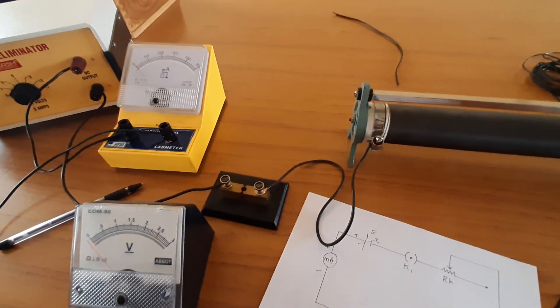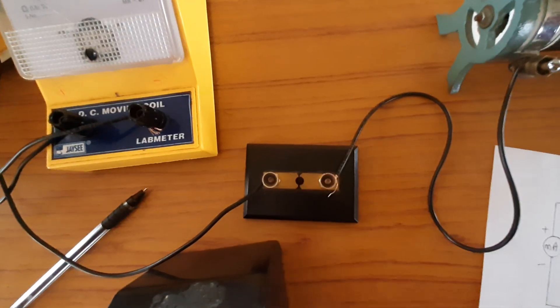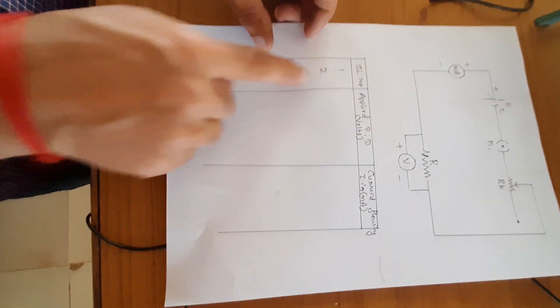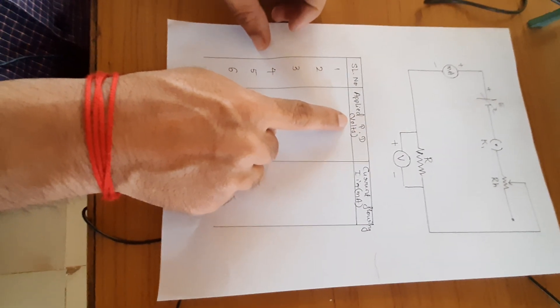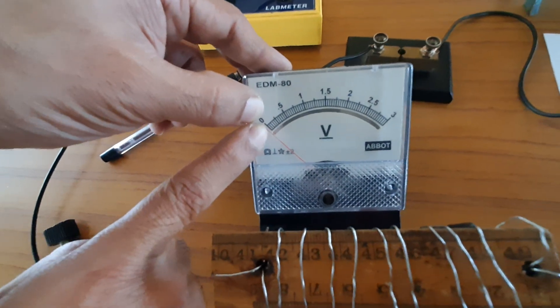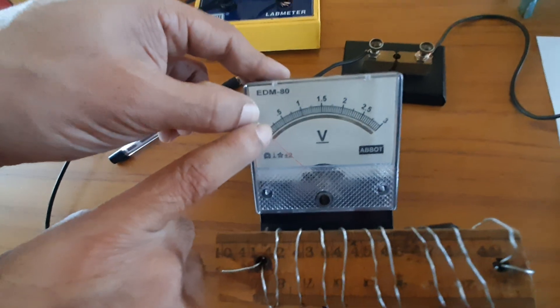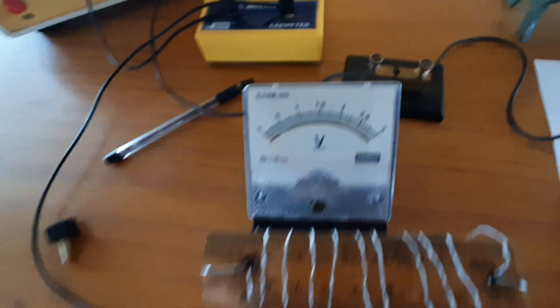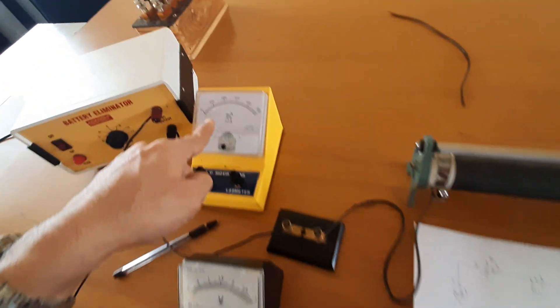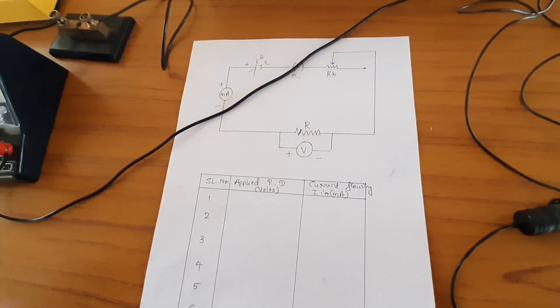While taking the readings, you have to insert the key. I will explain the tabular column. You have to take six trials. First, read the voltmeter reading — once a deflection is obtained, note the voltmeter reading. For example, if you get 0.25 here, then the corresponding milliammeter reading has to be noted in the second column.